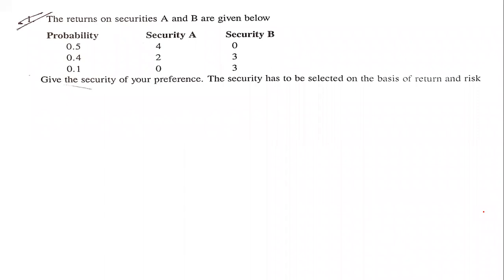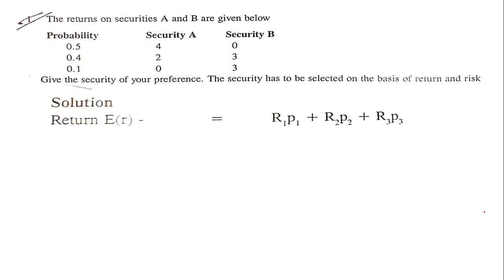To solve for return, we use the formula: Expected Return = Σ(Ri × Pi), that is R1 × P1 + R2 × P2 + R3 × P3. For Security A, R1 is 4, R2 is 2 with probability 0.4, and R3 is 0 with probability 0.1.